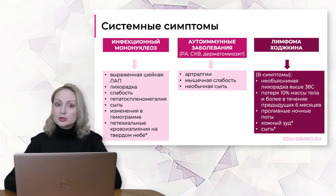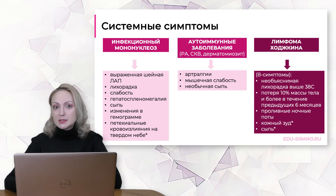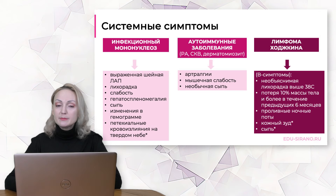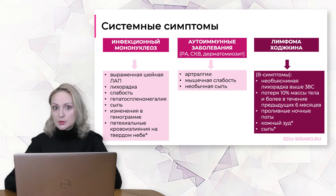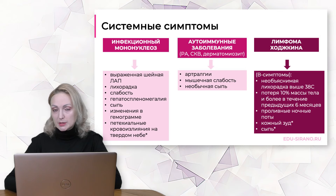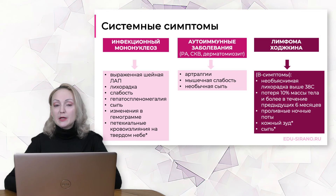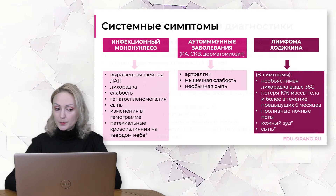Особое внимание должны привлекать так называемые B-симптомы. B-симптомы – это системные цитокинобусловленные симптомы, к которым относятся: необъяснимая лихорадка выше 38°C, не связанная с инфекционными эпизодами; потеря 10% массы тела в течение 6 месяцев, предшествующих появлению лимфаденопатии; и проливные ночные поты. Кожный зуд и сыпь в последнее время уже исключены из облигатных B-симптомов, характерных для лимфомы.